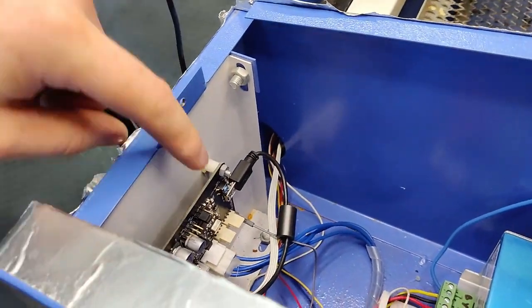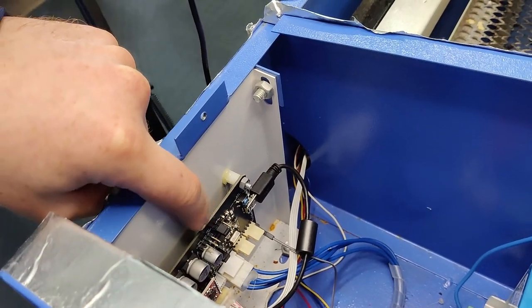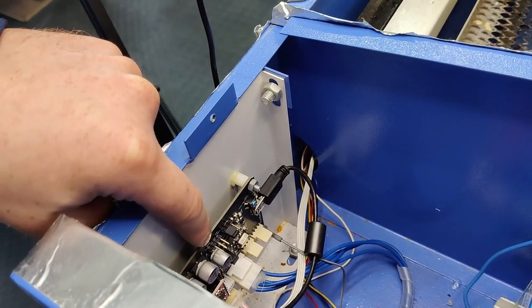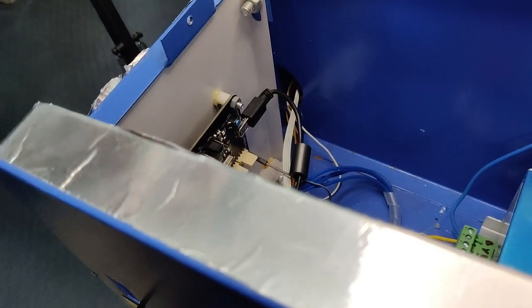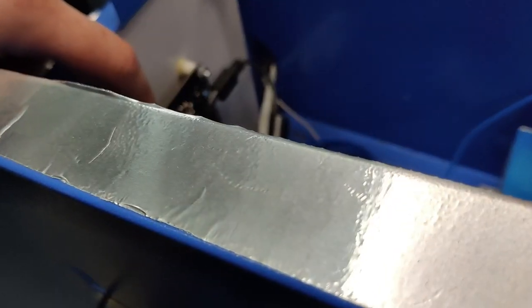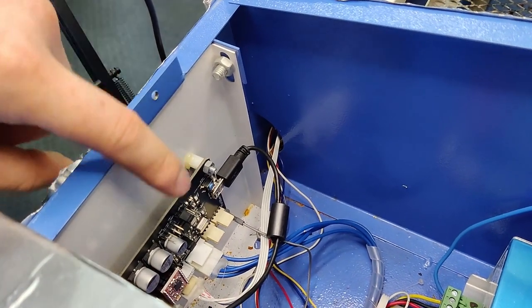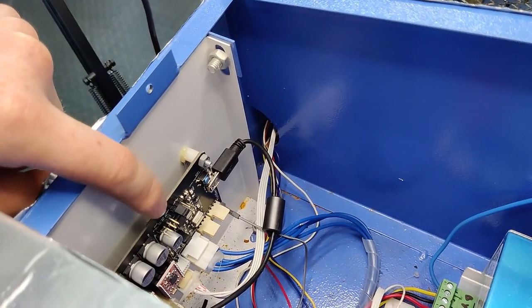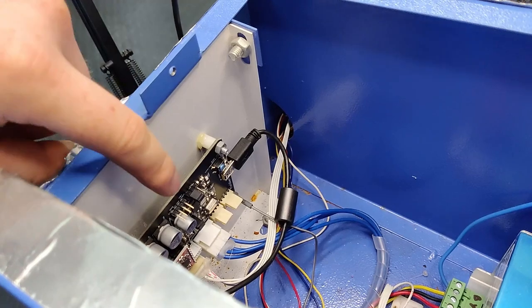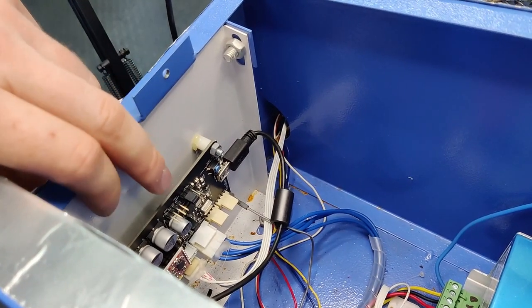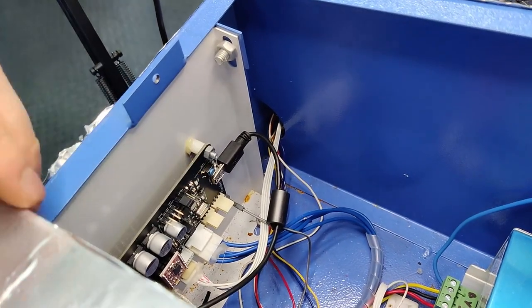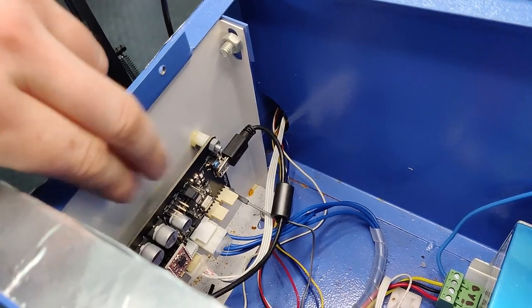Now the big improvement with this board over the stock board. The stock board is called an M2 Nano on these machines. This is a mini gerbil board which is not hugely expensive. It comes pre-programmed for this machine. You just have to wire it in and mount it inside this casing.